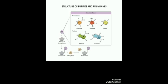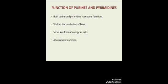Moving to the structures of purines and pyrimidines: they are both nitrogen-containing bases. The main difference is that purines consist of a six-membered and a five-membered nitrogen-containing ring fused together, whereas pyrimidines have only a six-membered nitrogen-containing ring. Regarding their functions, both purines and pyrimidines serve the same function in DNA. The most important function is the construction of DNA and RNA. When paired with purines, pyrimidines serve as building blocks for DNA — the basis for our genes and chromosomes. They also serve as a form of energy for cells and help in the regulation of enzymes.